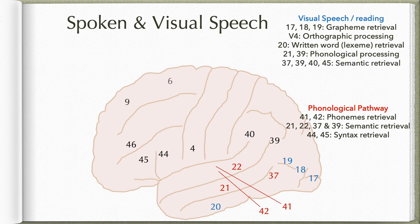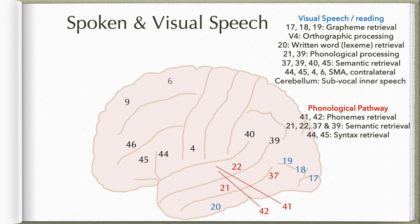Then the information is processed in areas 37, 39, 40, and 45 for semantic retrieval — the meaning of words is established, retrieved from memory stored from earlier exposure. Then a set of areas including 44-45 (Broca's area), motor area 4, premotor area 6, supplementary motor area, and contralateral cerebellum all become active.